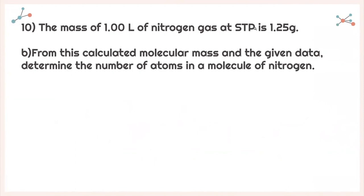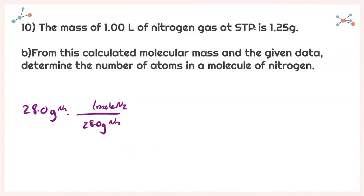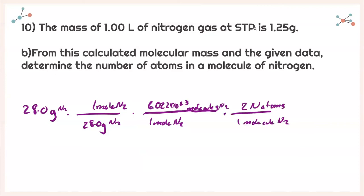For part B, determine the number of atoms in a molecule of nitrogen. We calculated a molecular weight of 28.0 grams. Converting: one mole of nitrogen gas has 28.0 grams, then using Avogadro's number to convert moles to molecules, and knowing one molecule of nitrogen gas has two nitrogen atoms, we get 1.20 times 10 to the 24 nitrogen atoms.